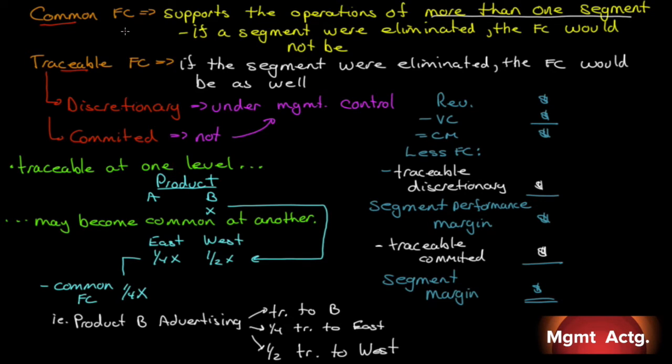A traceable fixed cost has one test. If the segment were eliminated, the fixed cost would be as well. Either the moment it was eliminated or shortly thereafter, the fixed costs that were traceable to that segment would disappear. If it doesn't disappear when the segment disappears, it wasn't a traceable cost, it was a common cost.